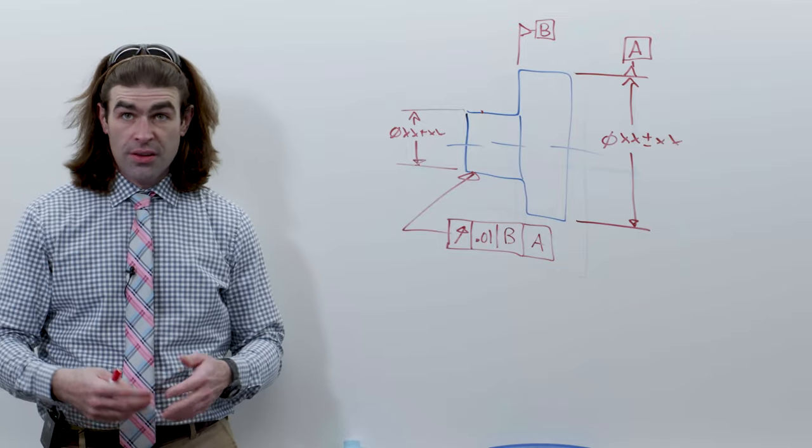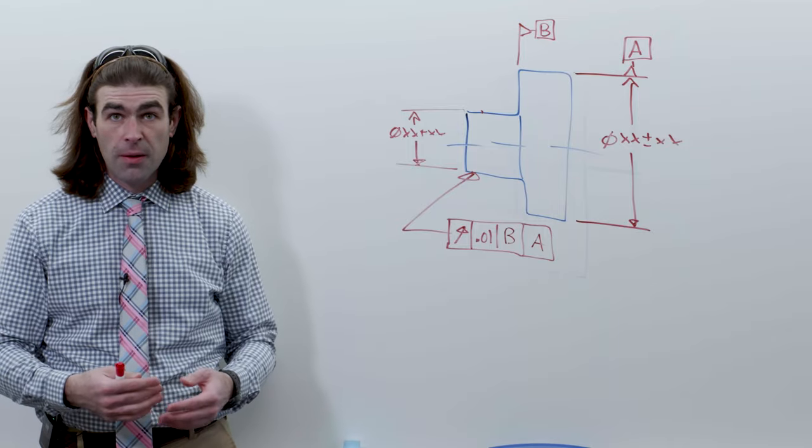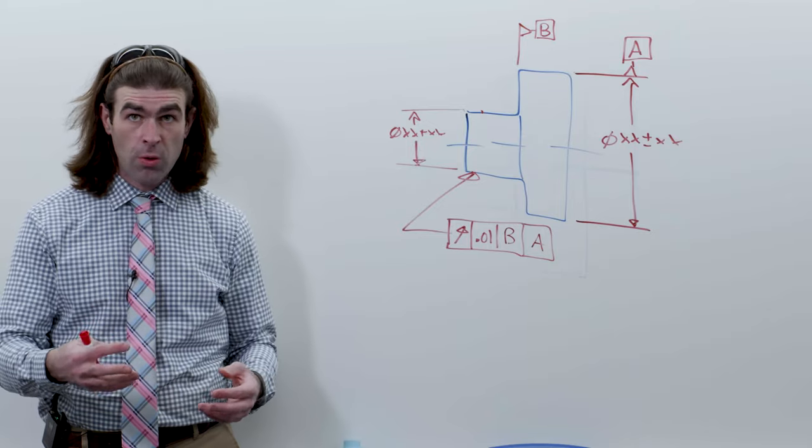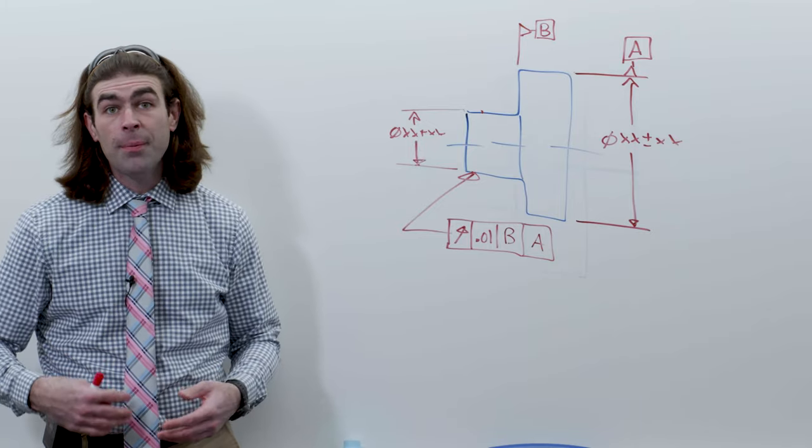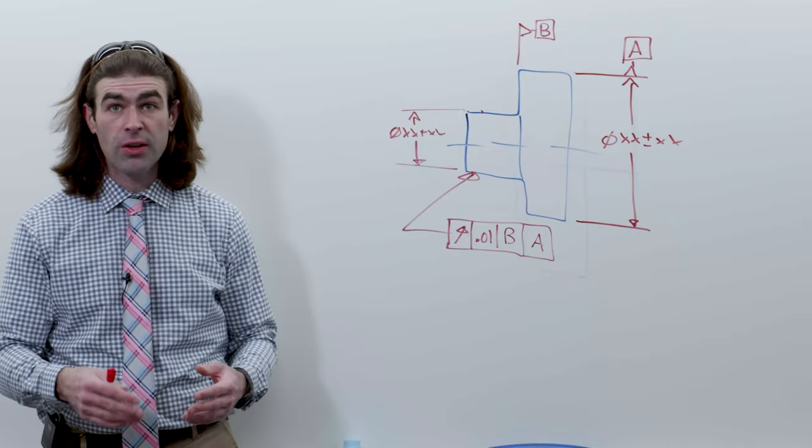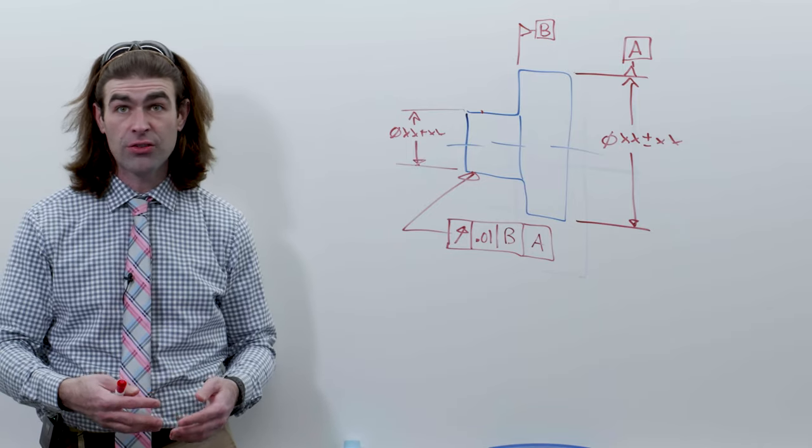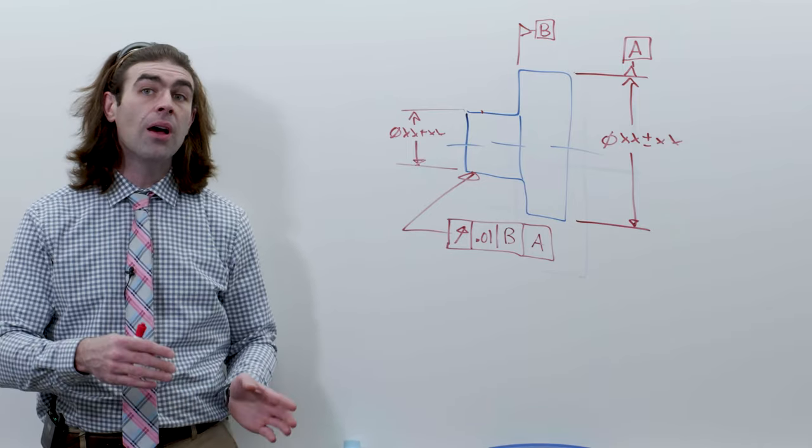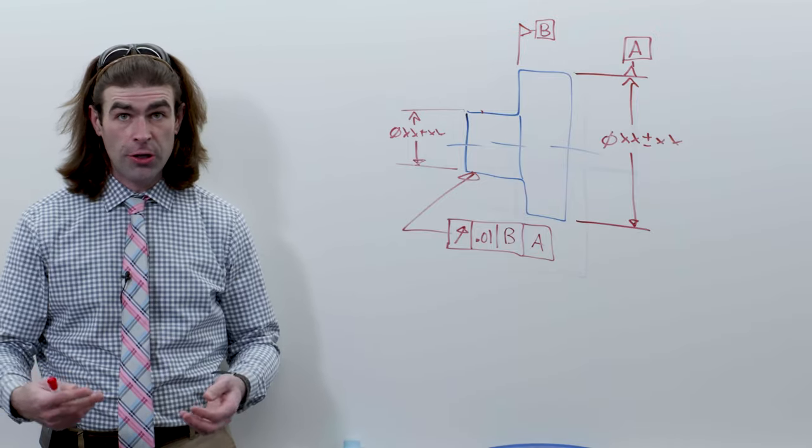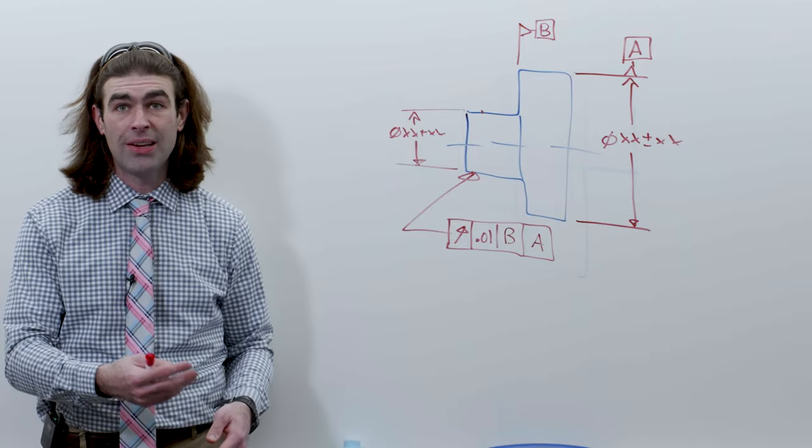The next thing is the advantage to runout. Like why would you use runout instead of position or profile or something? Runout is good for parts that spin because you're controlling the form, the balance of the part. The difference between runout and concentricity is that runout also controls form whereas concentricity doesn't necessarily control form. Runout covers your circularity or cylindricity. So it's really good for things like pulleys, drive shafts, anything that's spinning and potentially has to mate up in assembly.